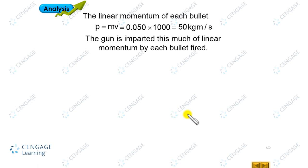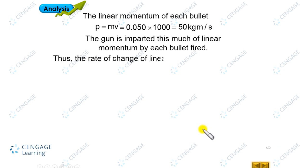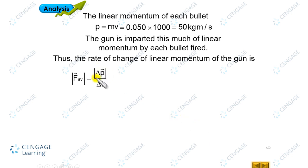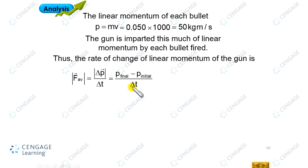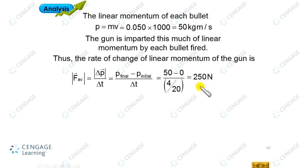The average force imparted by the gun on the bullet equals change in linear momentum delta-p divided by the time interval delta-t between two bullets. Delta-p equals final linear momentum minus initial linear momentum divided by delta-t. This is equal to 50 minus 0, divided by delta-t equal to 4/20, giving 250 Newtons. This is the impulsive force — meaning to hold the gun, the hero has to exert a force of 250 Newtons against the gun.